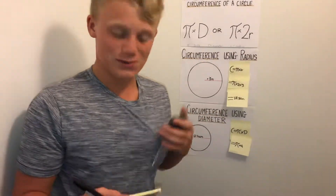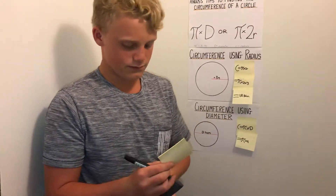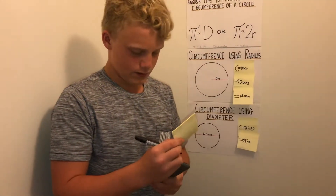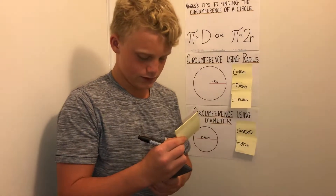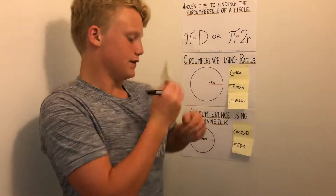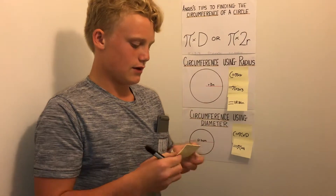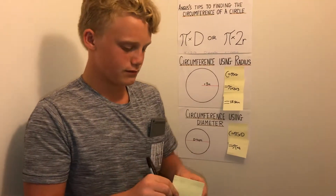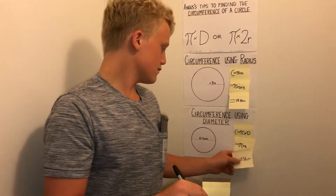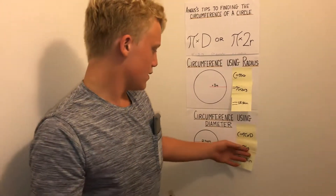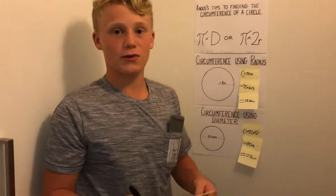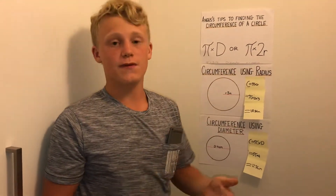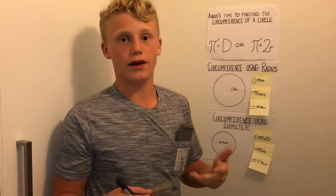Now all that's left to do is work out our answer. Pi times 4 gives us 12.56 centimeters. And there you have it — a quick video with some easy tips on how to work out the circumference of a circle with both diameter and radius. I hope you found it either interesting or helpful. Thank you.